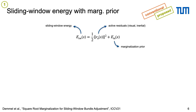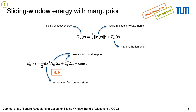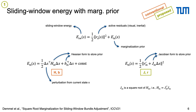The optimized nonlinear least squares energy consists of active residuals and a quadratic marginalization prior. Conventionally, the prior is stored as a positive semi-definite Hessian H and gradient vector B. Instead, we equivalently store Jacobian J and residual vector R, where J is the square root of H.